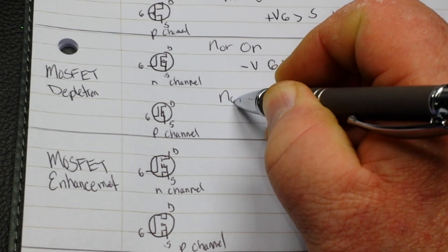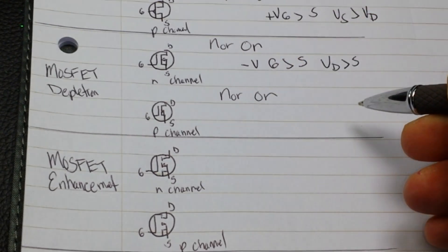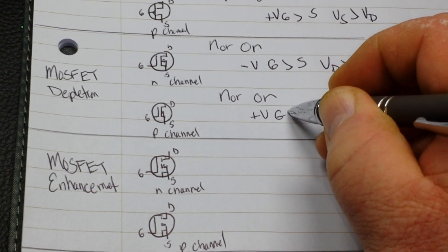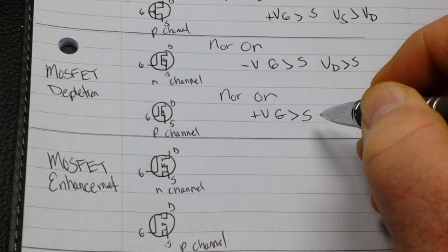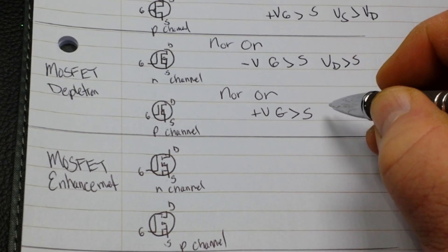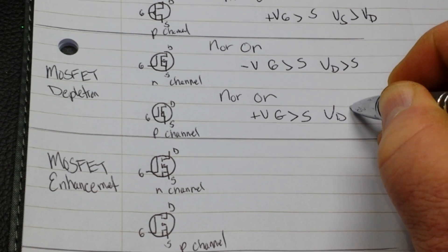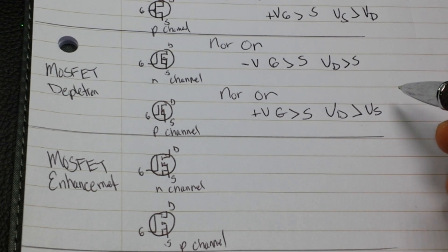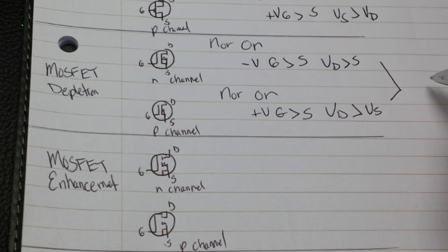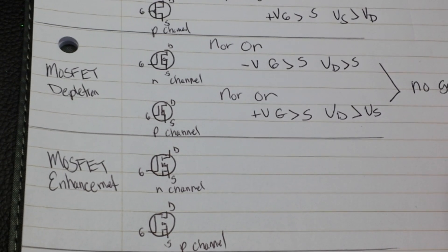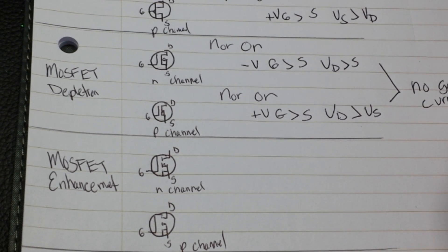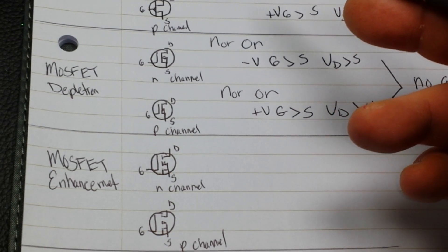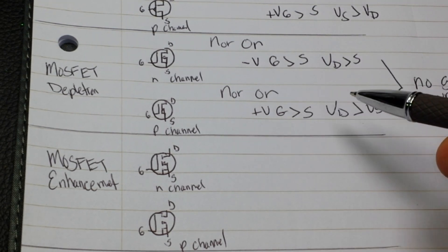Now, the P channel also normally on, alright. And a positive voltage at its gate relative to the source turns it off. And it operates VD is greater than VS. It also does not require a gate current. So, your MOSFET depletion modes require no gate current. And that's where there are different things like a JFET, simply a voltage operated device.